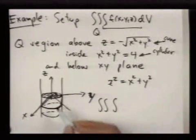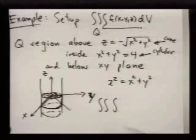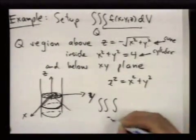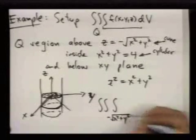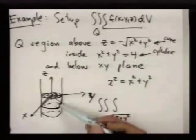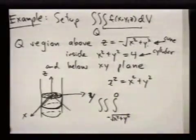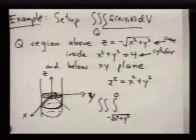But the inner one is the range of z values. So z, as I said, is going from this value to 0, and this depends on where you are inside this circle.